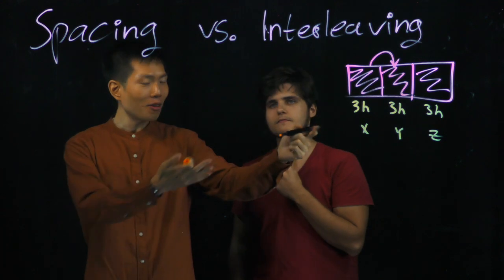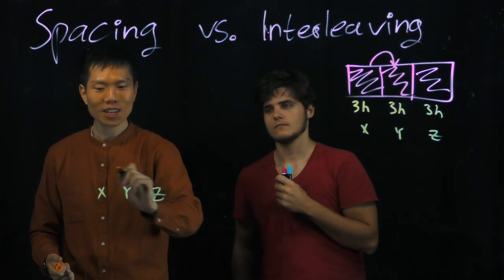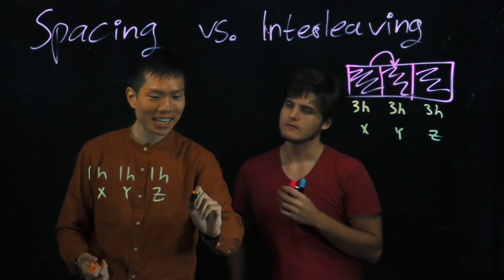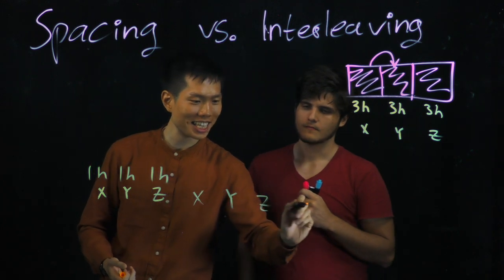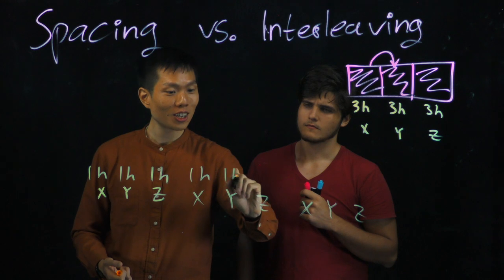Break it down to X, Y, Z with one hour each. Then coming back again X, Y, Z, X, Y, Z. So in total you're not spending more time or less time, but this way is more effective.